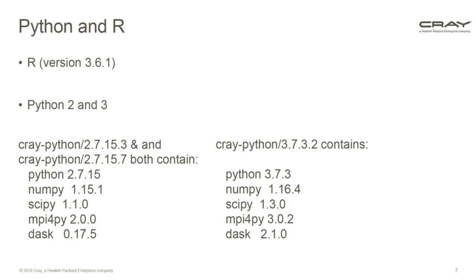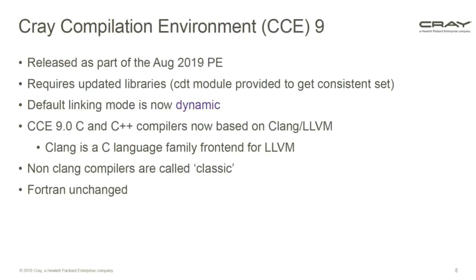There's a major change in CCE9 that's particularly important for C users. Released in August 2019, it's not compatible with existing software — you have to switch a whole set of libraries. The default linking mode has been set to dynamic, whereas on Archer it's static. That doesn't mean everything must be dynamic, but some system libraries will need to be linked dynamically. You can still build application libraries statically and switch the default back with an environment variable.